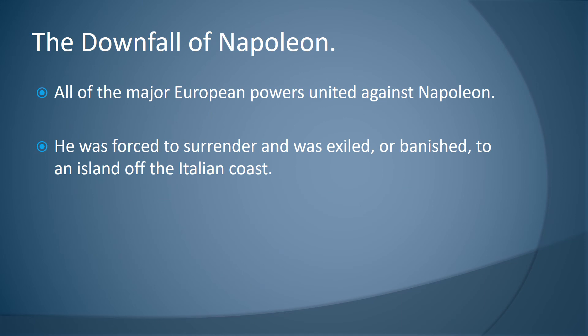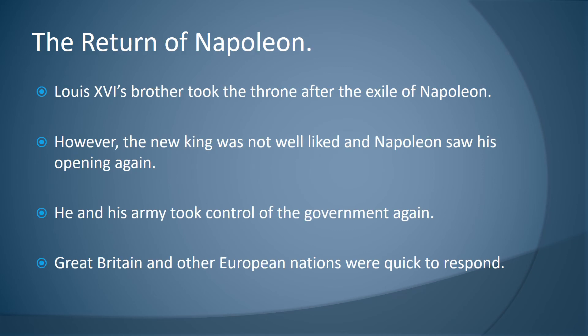The downfall of Napoleon: all of the major European powers united against Napoleon. He was forced to surrender and was exiled to an island off the Italian coast. Louis XVI's brother took the throne, but the new king was not well liked, and Napoleon saw his chance again. He and his army took control of the government once again, but Great Britain and other European nations were quick to respond.